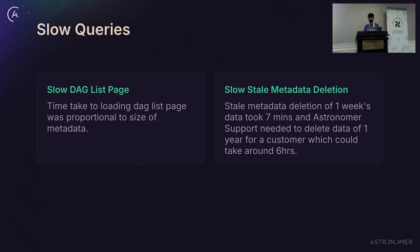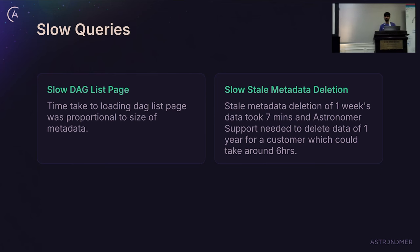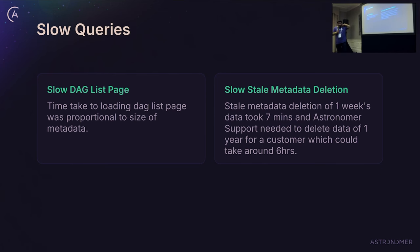Why did we look into missing indexes? When there are a large number of DAG tags getting created, often the homepage and the tags list page gets slow. Our Astronomer support team has dashboards monitoring CPU utilization, and they saw some databases seeing high CPU utilization. What they do is delete stale metadata. They tried deleting about one week's data on one deployment and it took almost seven minutes. They wanted to delete a year's data — calculating the numbers, that would have taken almost six hours. So that is when we looked into slow queries.